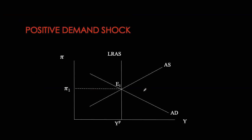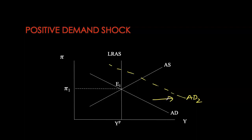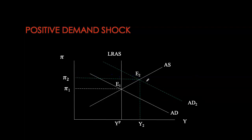Now let's look at different types of shocks that generate the business cycle, starting with a positive demand shock. The economy is initially at long-run equilibrium where GDP equals potential and inflation is at pi 1 at equilibrium E1. A positive demand shock shifts the AD curve to the right — this could be from autonomous monetary policy easing, autonomous consumption, government purchases, planned investment spending, or autonomous net exports rising. Our new short-run equilibrium is at point 2 where AS and AD intersect, giving a higher level of real GDP and a higher inflation rate.